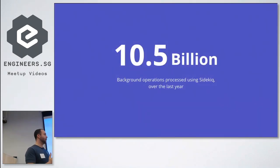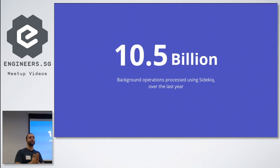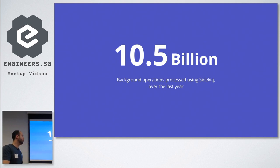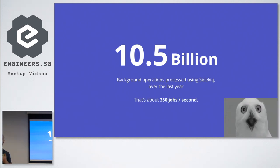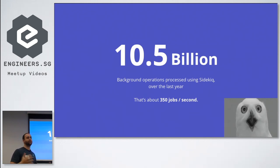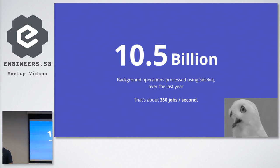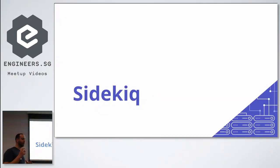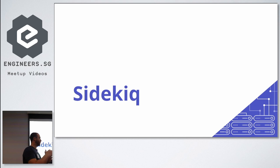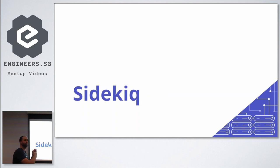I want to start with a number — the amount of operations that TradeGecko has been running for the past year on top of our Sidekiq infrastructure. What that means is per second we synchronize about 350 jobs to different partners, different APIs, different stores, different users. To reach that scale, I want to take a deep dive into how Sidekiq works and how we utilize it, talk about the challenges given Sidekiq's architecture, how we've faced and solved them, and how it helped us reach that number.